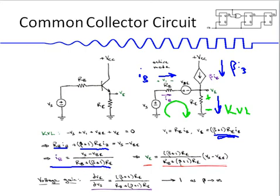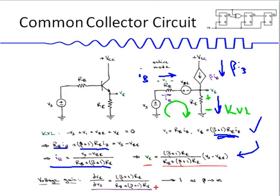Once we know ib we can compute the actual value of ve. The voltage gain in this case is dve/dvs, which gives (beta plus 1) times re over (rb plus (beta plus 1) times re). As beta becomes large, this goes to one. If beta is small there will be a voltage gain less than one, so the voltage gain for the common collector configuration is typically less than or equal to one.